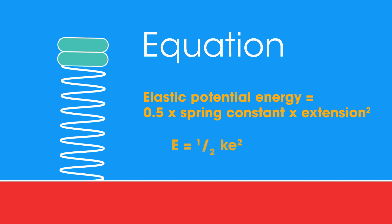The amount of elastic potential energy stored in a stretched spring can be calculated using this equation. Elastic potential energy equals 0.5 times spring constant times extension squared, assuming the spring obeys Hooke's Law.